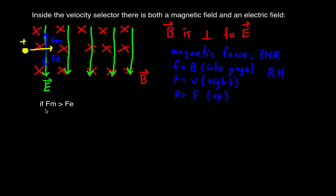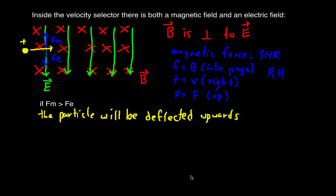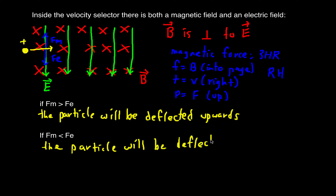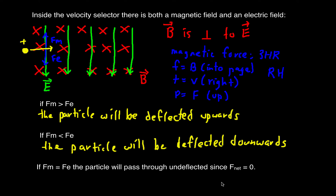If the magnetic force is greater than the electric force, the particle will be deflected up and won't exit the velocity selector. If the magnetic force is less than the electrostatic force, the particle will curve down in the direction of the electric force and won't make it out either. But if the magnetic force is equal to the electrostatic force, the particle will pass straight through undeflected, since the net force is zero.